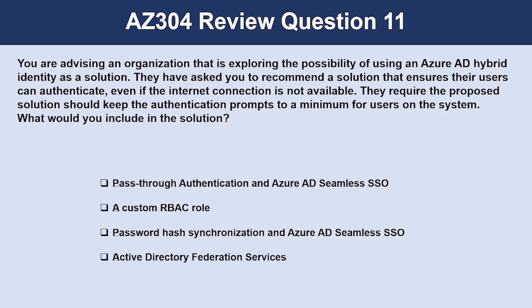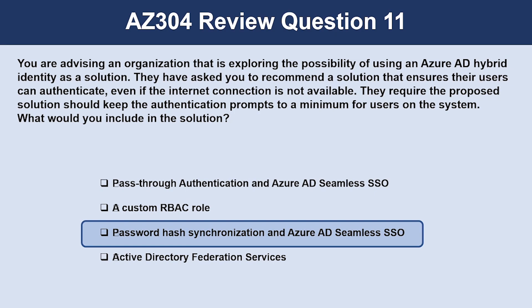Question number eleven. You are advising an organization exploring Azure AD hybrid identity. They need a solution that ensures users can authenticate even if the internet connection is not available, while keeping authentication prompts to a minimum. The correct answer is password hash synchronization and Azure AD seamless single sign-on. The password hash synchronization agents transmit hashed passwords via Azure AD Connect to Azure AD over SSL every two minutes, functioning as if there is no internet connection. Users can sign in locally and to cloud services with the same credentials.